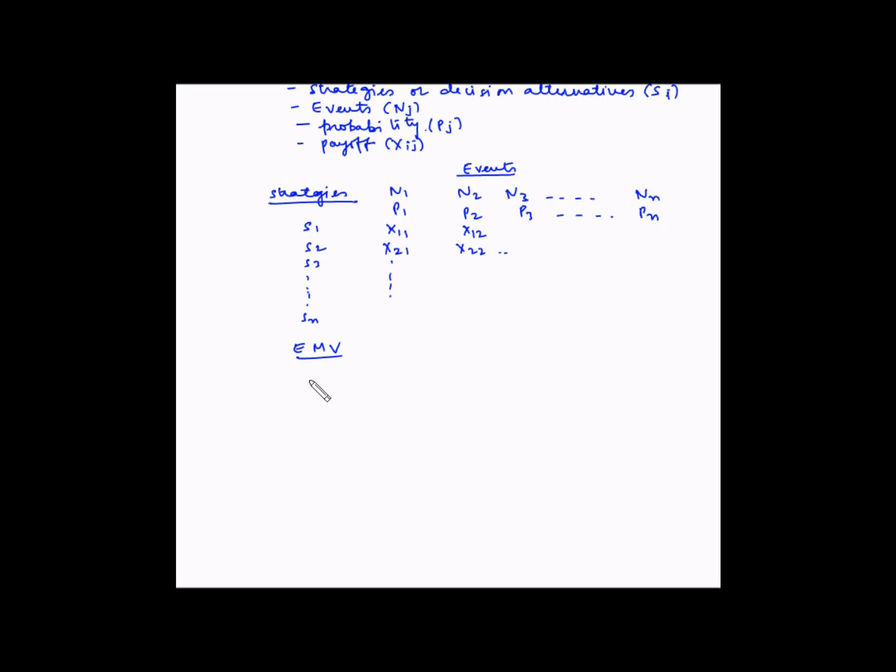In other words, if X can take a value of X1 with a probability of P1, X2 with a probability of P2, and so on, then the Expected Monetary Value EMV is equal to X1 multiplied by P1 plus X2 multiplied by P2 and so on till Xn multiplied by Pn.